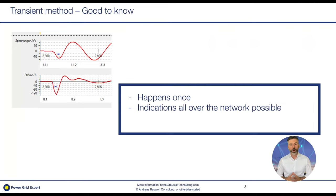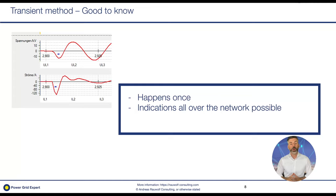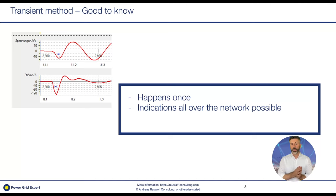It is important to know that the transient only occurs at the very beginning of the earth fault and does not happen again. Especially if you are using earth fault search methods like shifting the normally open point, the transient method will not trigger again. Also, as with all earth fault methods in compensated and isolated networks, indications may occur all over the network — not only in the faulty feeder — but in those other cases they will point toward the direction of the fault location.